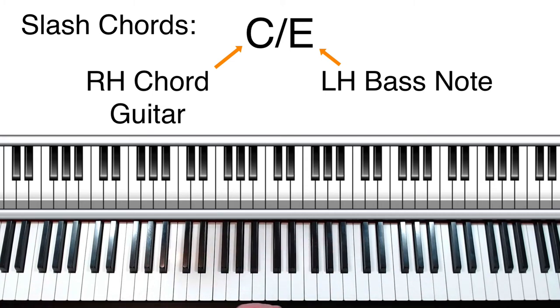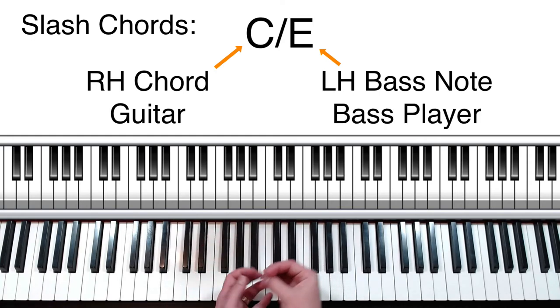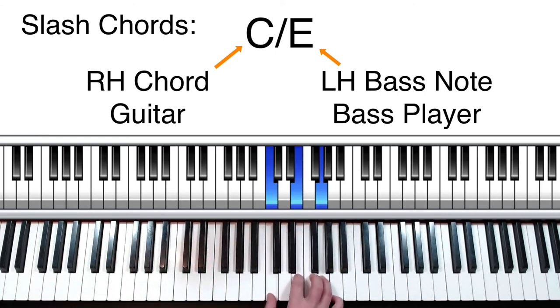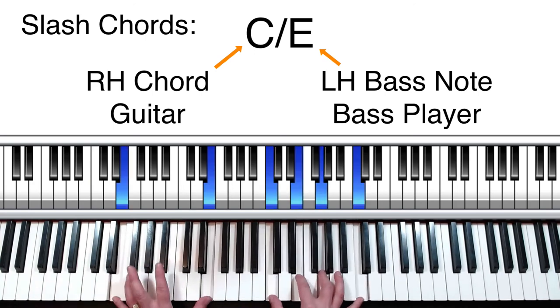But the bass player now knows, okay, I'm not going to play a C. I'm going to play an E instead. And that's the great thing about pianos. Piano is kind of its own band, isn't it? We have the chords in the right hand and bass notes in the left hand, and it really uses that nice full sound.